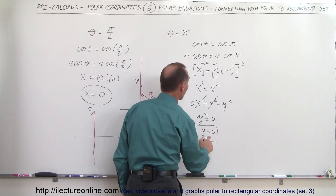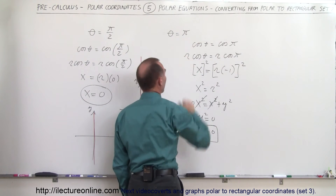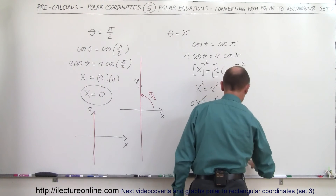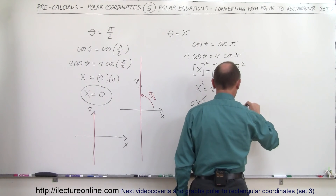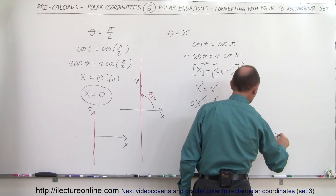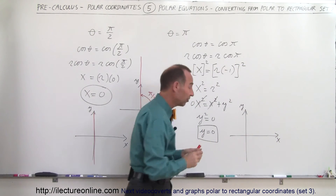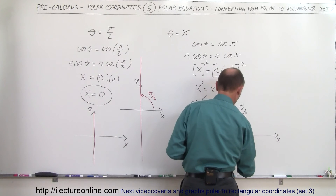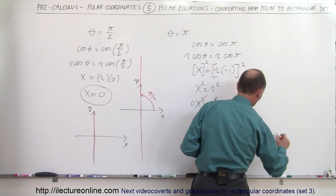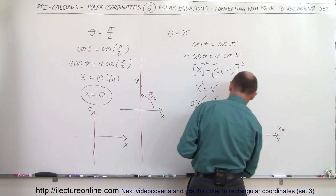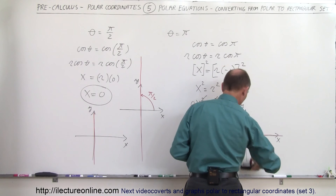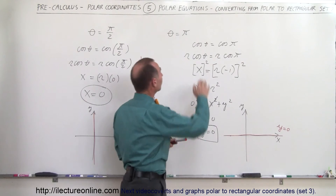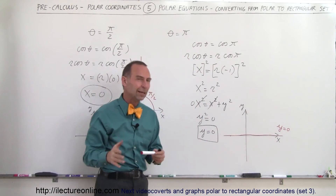So this is the rectangular equivalent of theta equals pi. When we graph y equals 0, here's the y-axis, here's the x-axis. When y equals 0, x can be any value as long as the y-coordinate is 0, which means that's a line right on top of the x-axis — y equals 0.